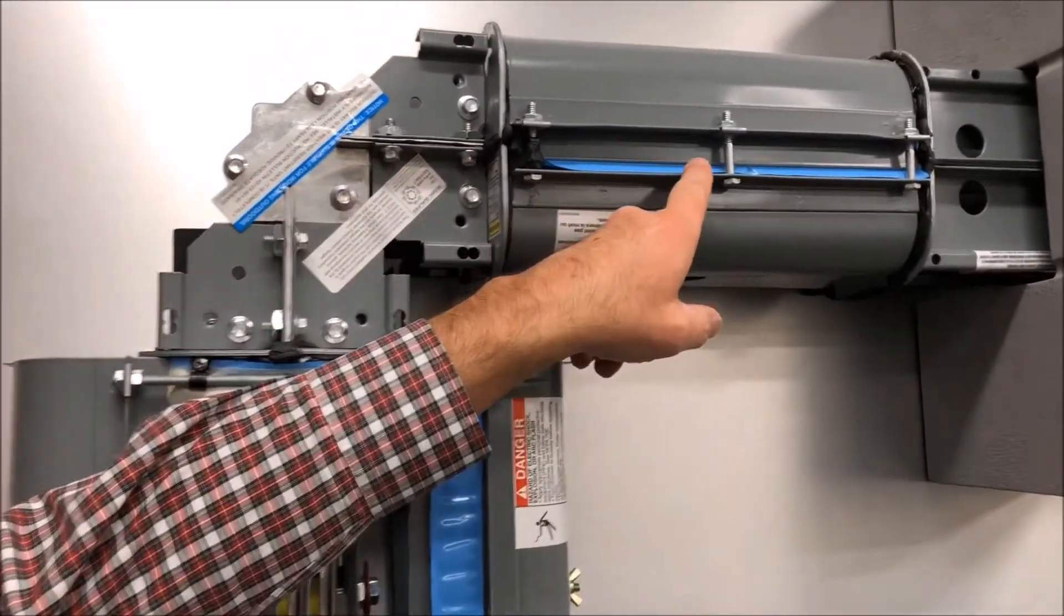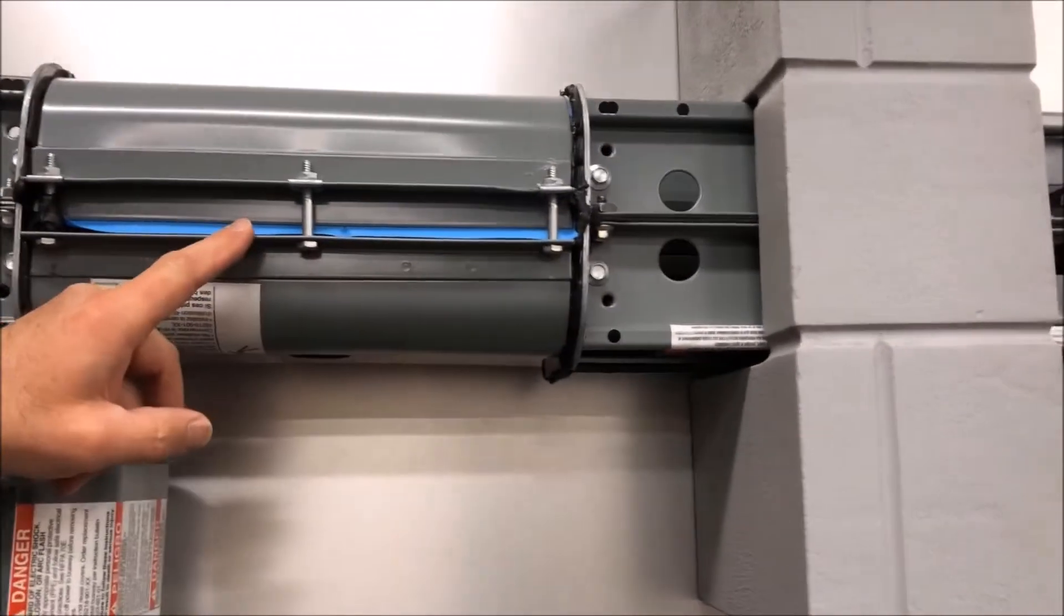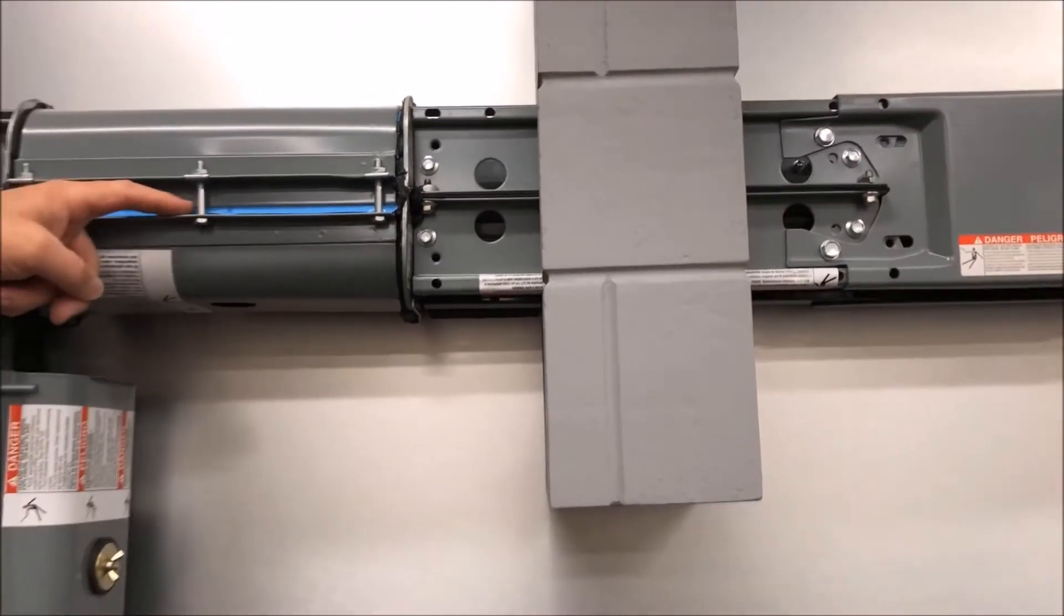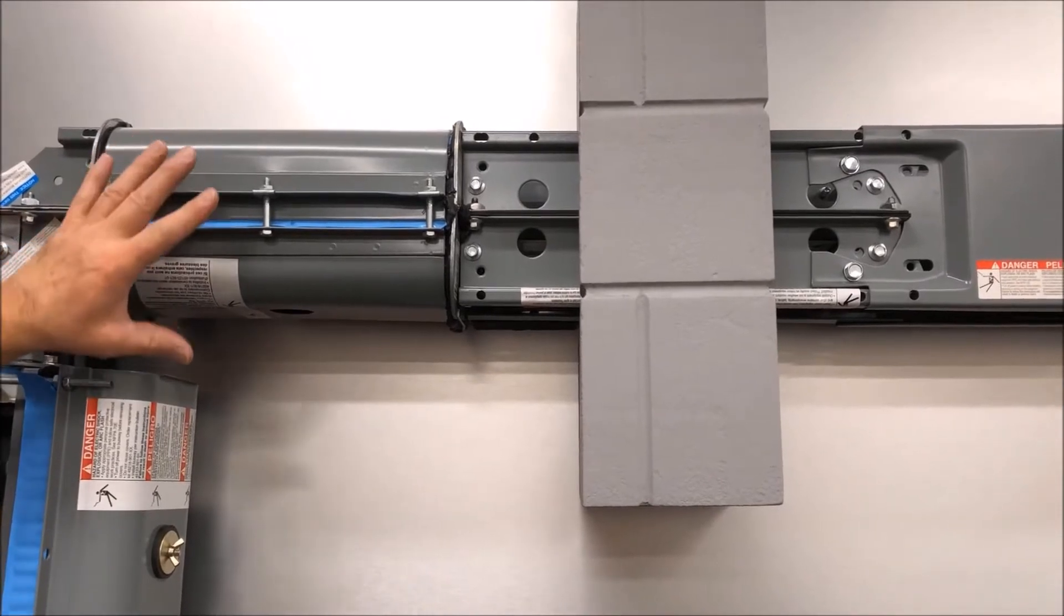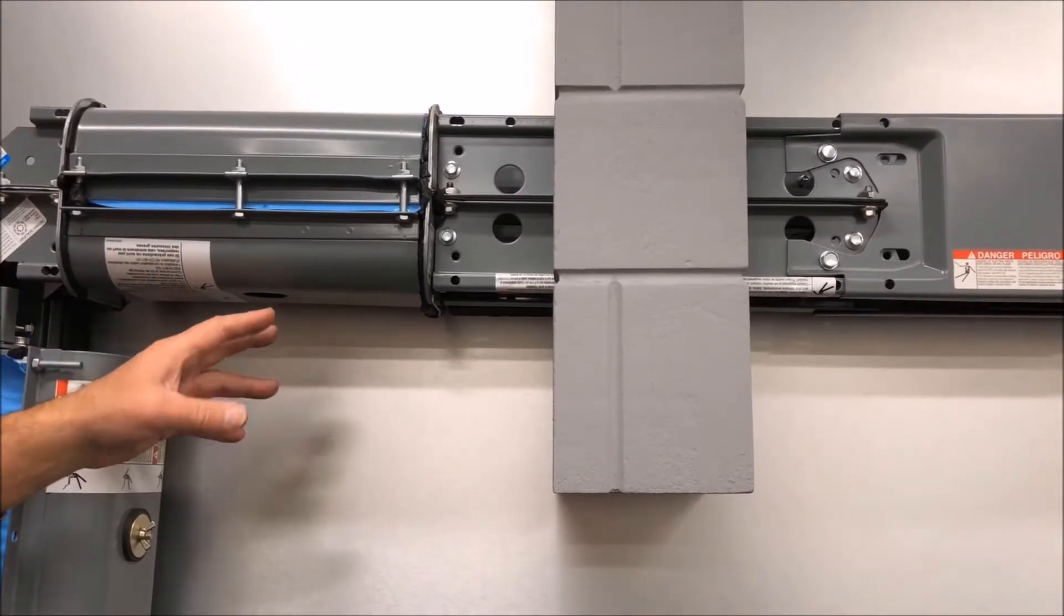This outdoor joint is assembled correctly, except this blue tape should not be there. That should just be the black butyl rubber. They did that for display purposes only. The drain hole is here, so this is all outdoor busway.